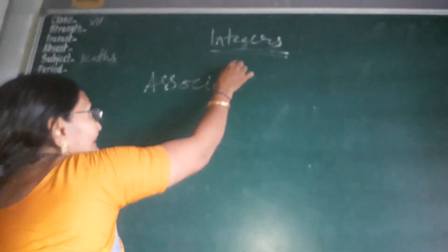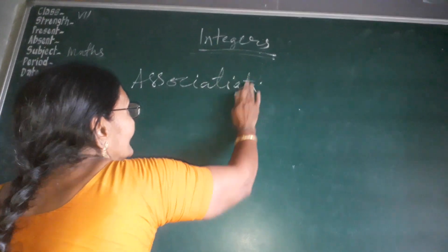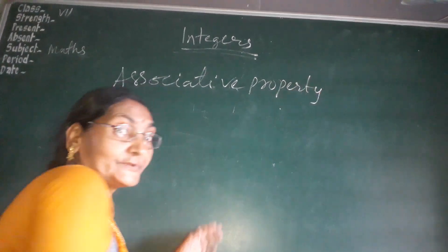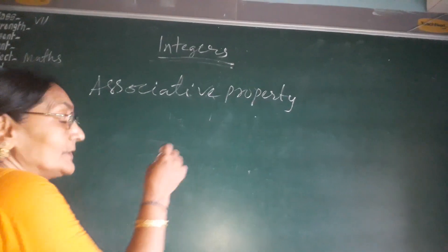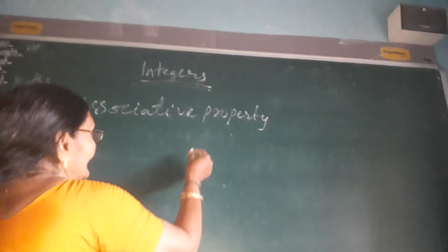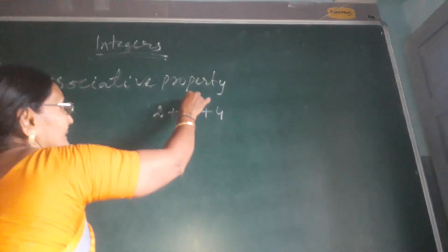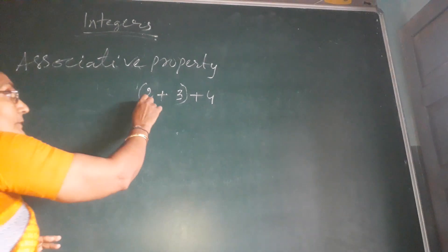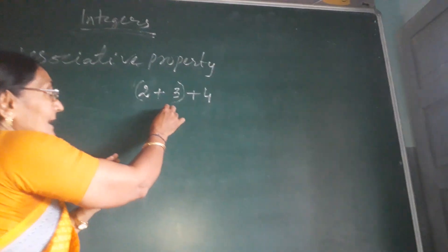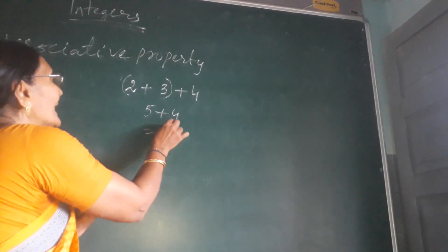Associative property of integers — what is this? If more than two integers are added in any group, suppose two, three, four: first I group these two and add them, then add the third integer. So two plus three is five, and five plus four is nine.